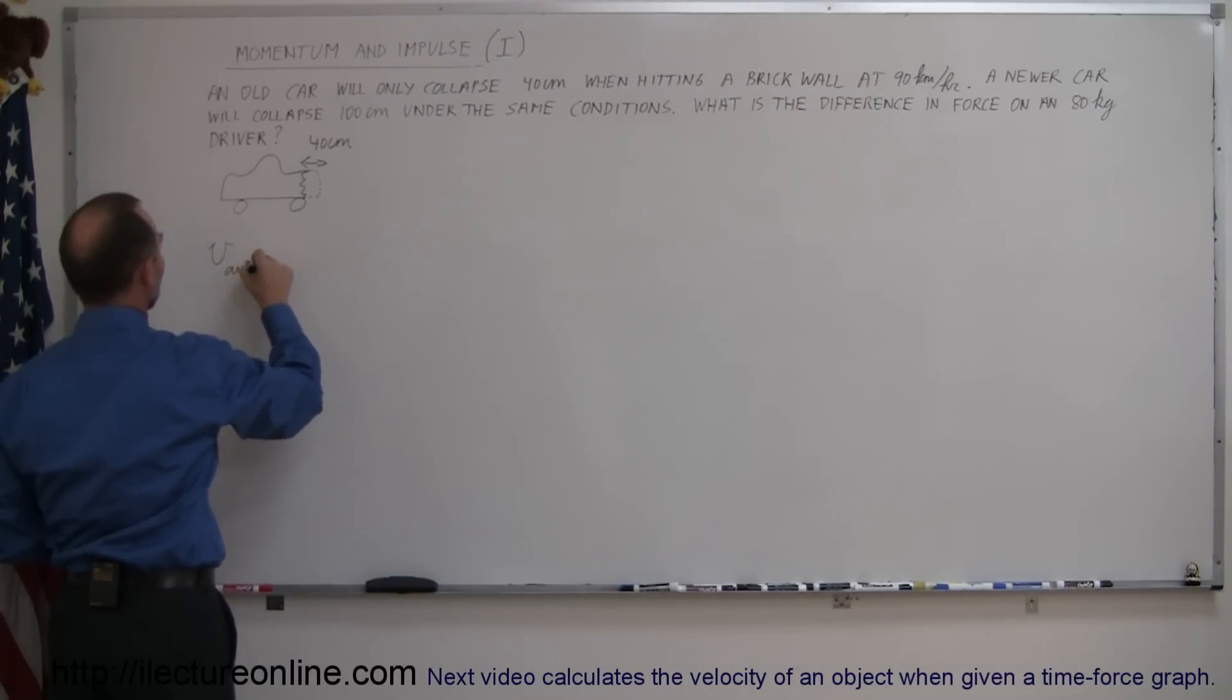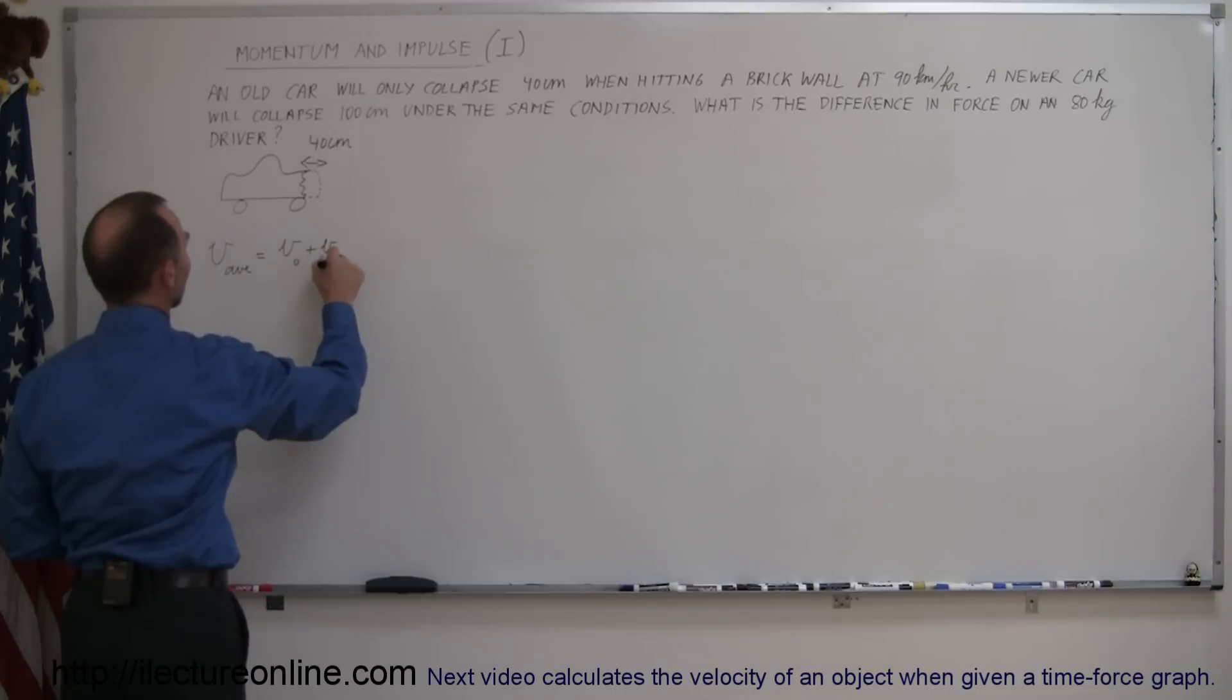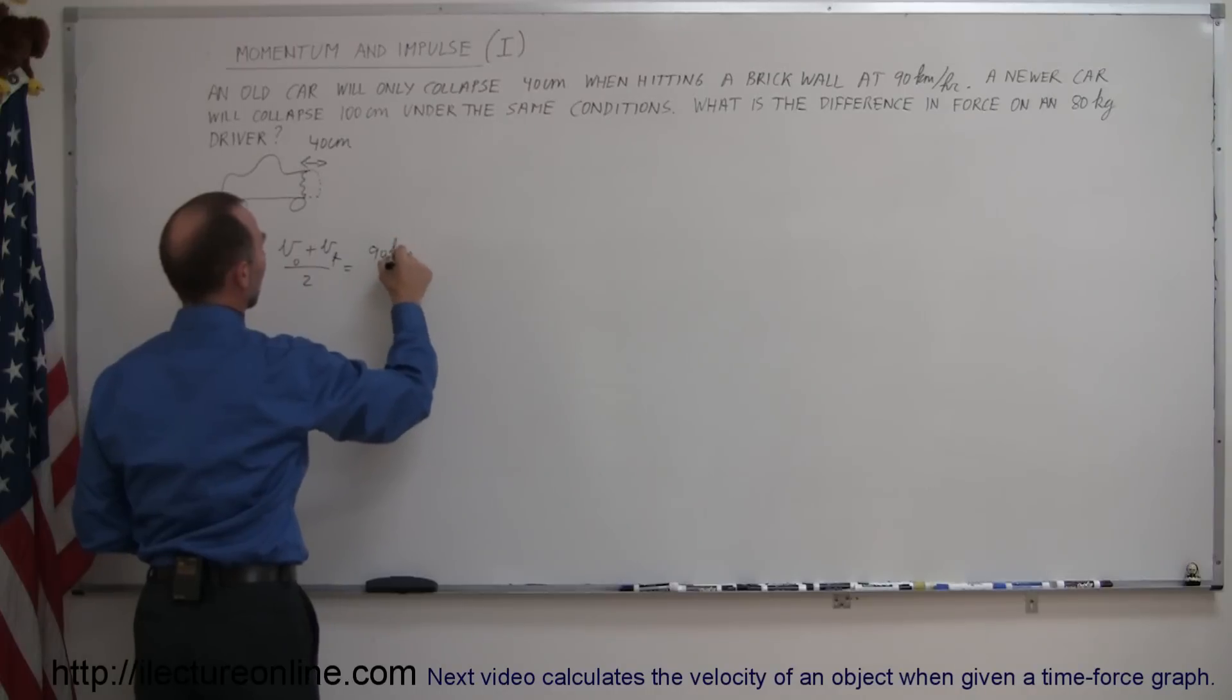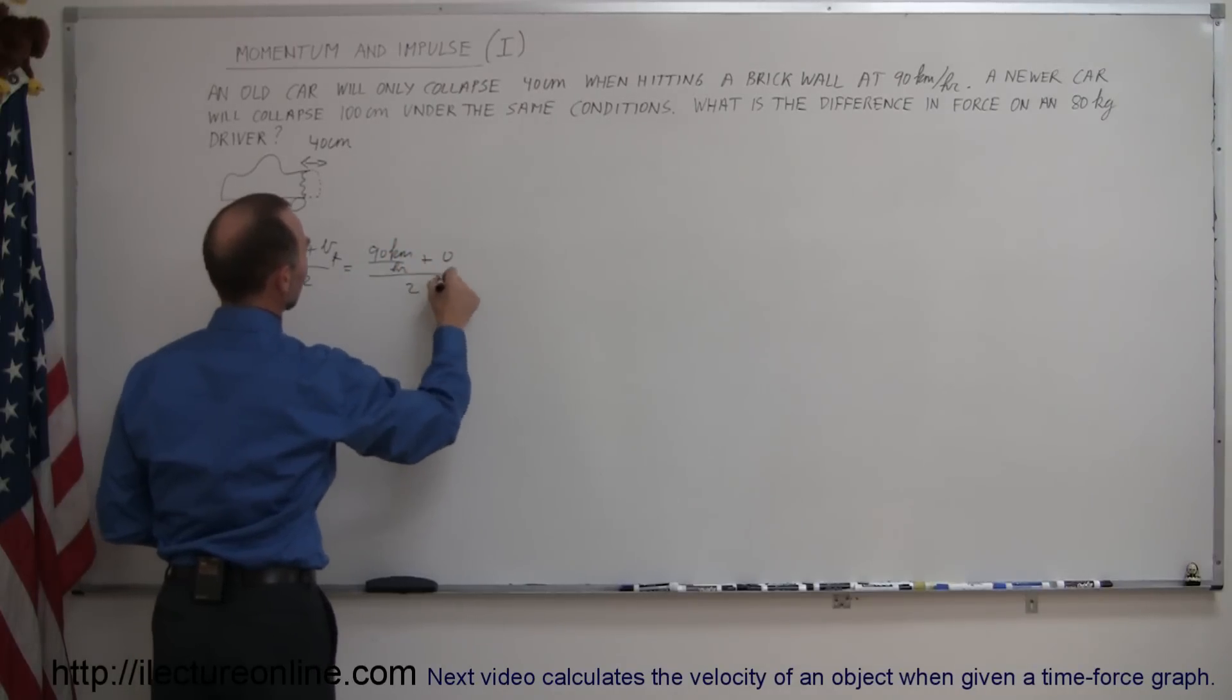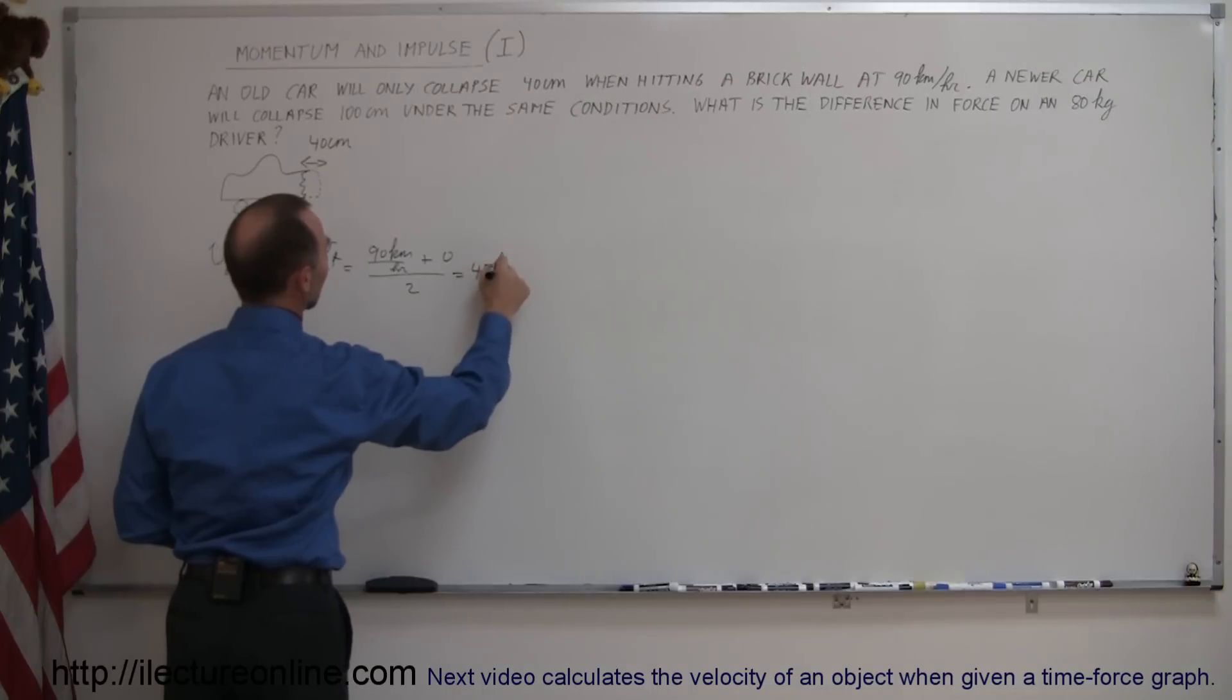The velocity average is equal to v initial plus v final divided by 2, so that would be 90 kilometers per hour plus 0 divided by 2, which is 45 kilometers per hour.